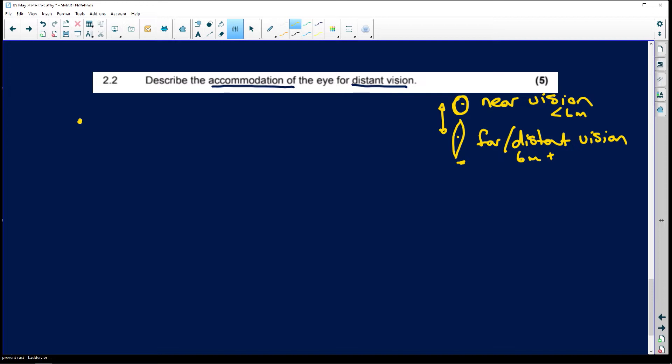So let's look at answering this question for distant vision. The first thing you're going to have is that the ciliary muscles that hold that lens - the ciliary muscles relax and pull backwards.